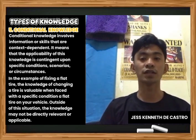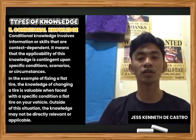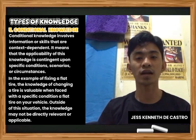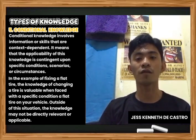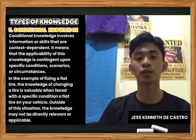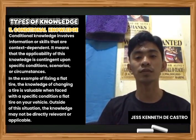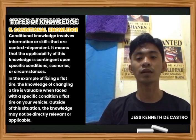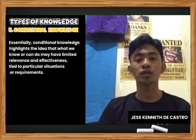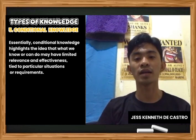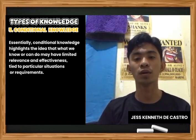An example of conditional knowledge is fixing a flat tire — the knowledge of changing a tire is applicable when faced with a specific condition, such as having a flat tire on your vehicle. Outside of that situation, the knowledge may not be directly applicable. Essentially, conditional knowledge highlights that what we know or can do may have limited general agreement.